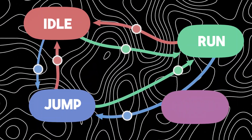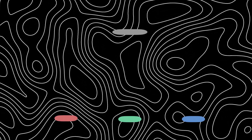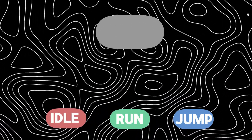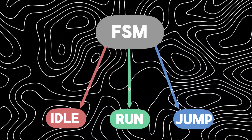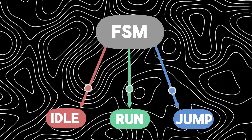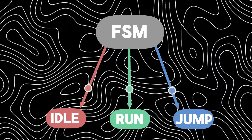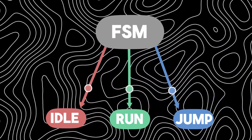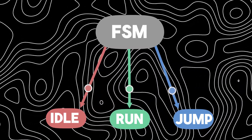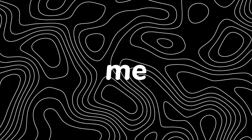As a solution, I made a little system — let me explain how it works. Same as before, we have idle, run, and jump states, but these are now connected to a state manager with conditions. The state manager transitions between all of these states based on the conditions, so the states don't have to transition to each other by themselves. The manager handles this, making it super simple.